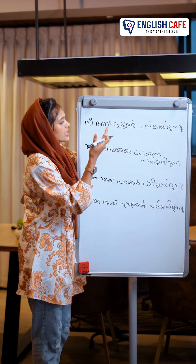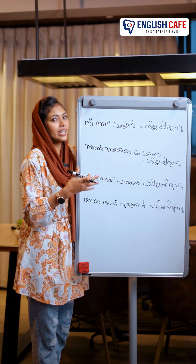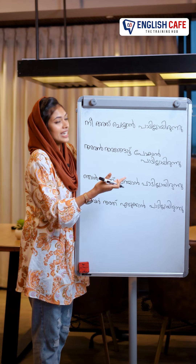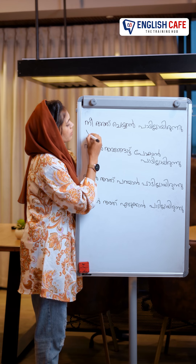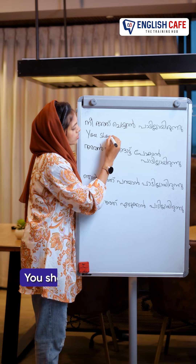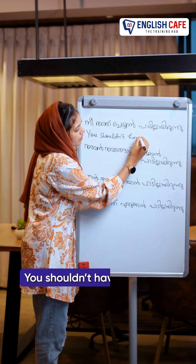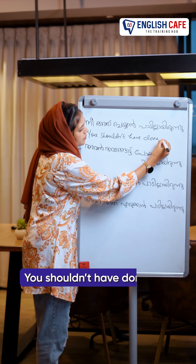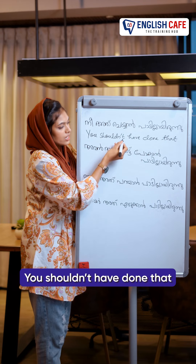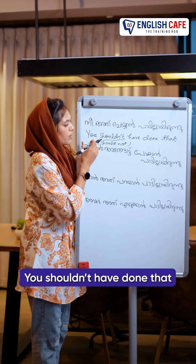So that sentence is: you don't have to do that. If you don't have to do that, we will do it. So what do we say? You shouldn't have done that. So you shouldn't have — you can contract this sentence.